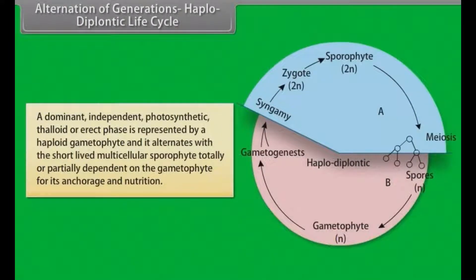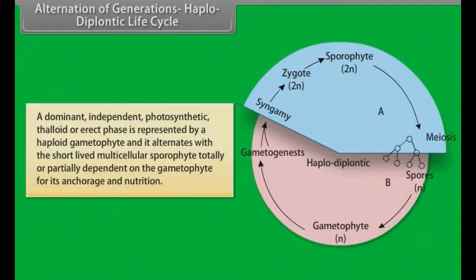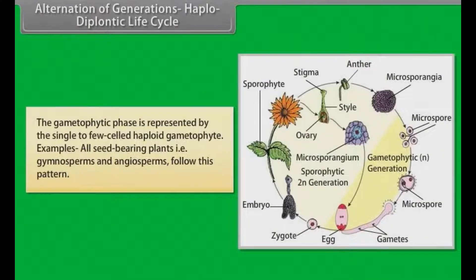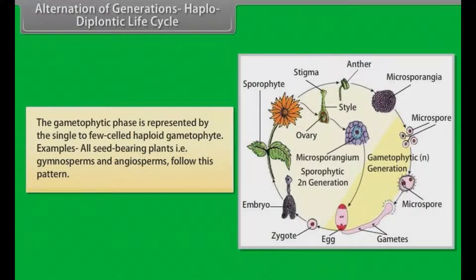In the haplodiplontic life cycle, a dominant, independent, photosynthetic thallose or erect phase is represented by a haploid gametophyte; it alternates with a short-lived multicellular sporophyte totally or partially dependent on the gametophyte for anchorage and nutrition. The gametophytic phase is represented by a single to few-celled haploid gametophyte. Examples: all seed-bearing plants — that is, gymnosperms and angiosperms — follow this pattern.